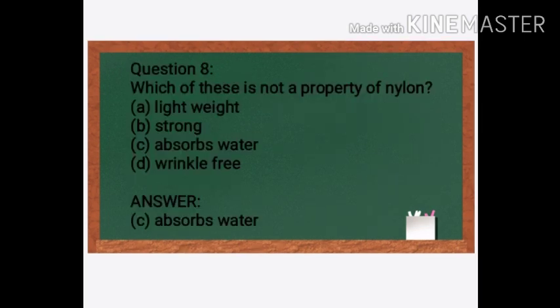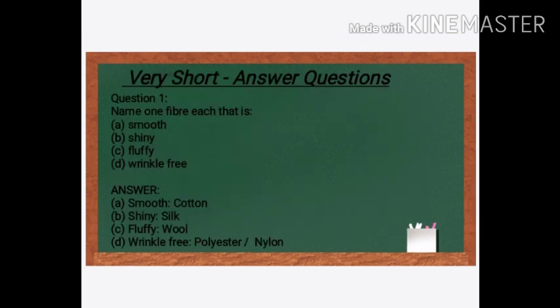Next question: Which of these is NOT a property of nylon? Options: A. Lightweight, B. Strong, C. Absorbs water, D. Wrinkle-free. The answer is C. Absorbs water. Nylon is a synthetic fiber, and synthetic fibers do not absorb water.